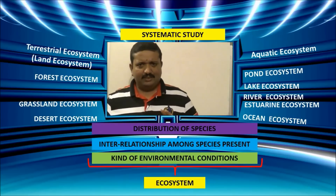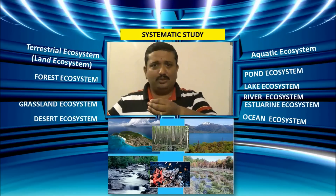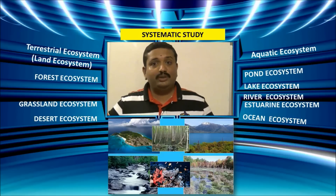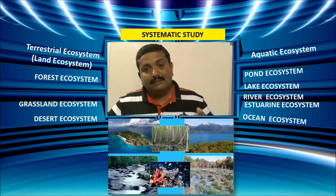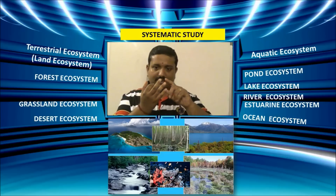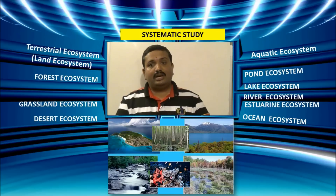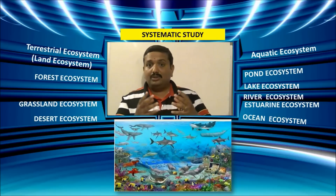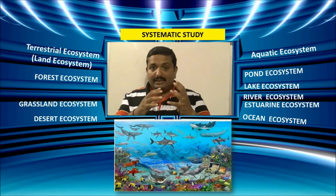For aquatic ecosystems, just like land ecosystems, you have ponds — small shallow bodies of water — lakes, which are a bit bigger, and rivers. Rivers flow into oceans, and between river and ocean there is an area of mixed salinity called an estuary. So you have ponds, lakes, rivers, estuaries, and oceans — five aquatic ecosystems, each with different kinds of aquatic life.